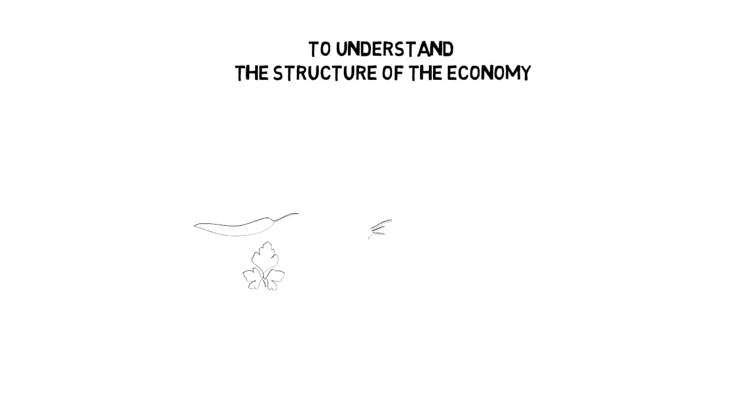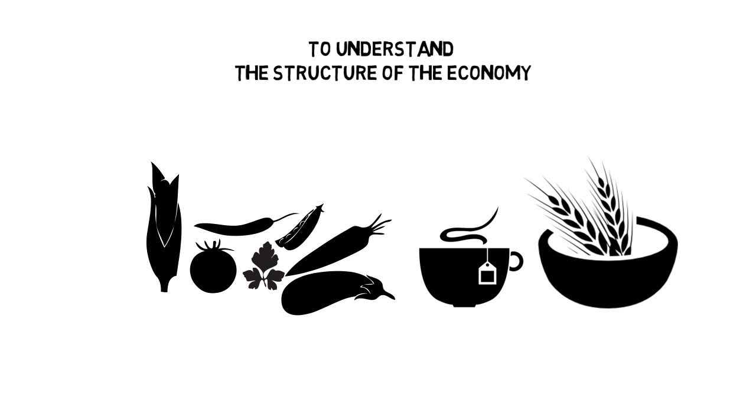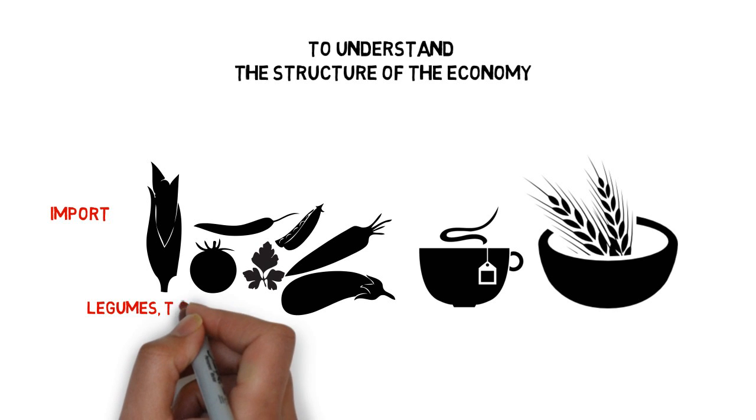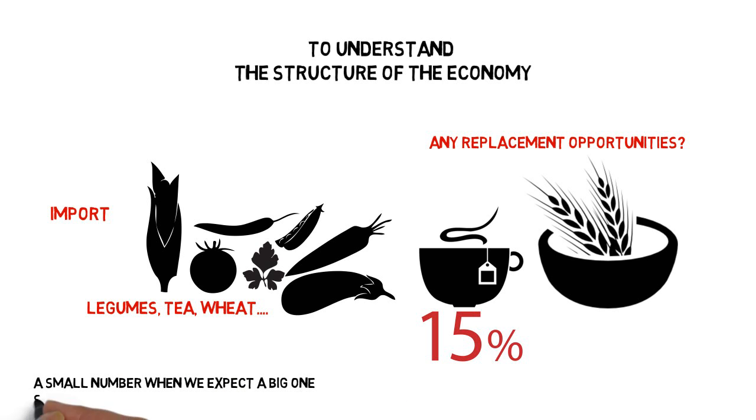There are two main uses. Firstly, we can use them to understand the structure of the economy. And that can help us target our assistance efforts. Input-output analysis can help identify opportunities to strengthen linkages within the economy. We can see where imports enter the economy and that can help us identify replacement opportunities. And if we see a small number in a cell when we expect a big one, that suggests an opportunity for expansion. And not just any expansion, but one that will help the using industry as well as the supplying industry.